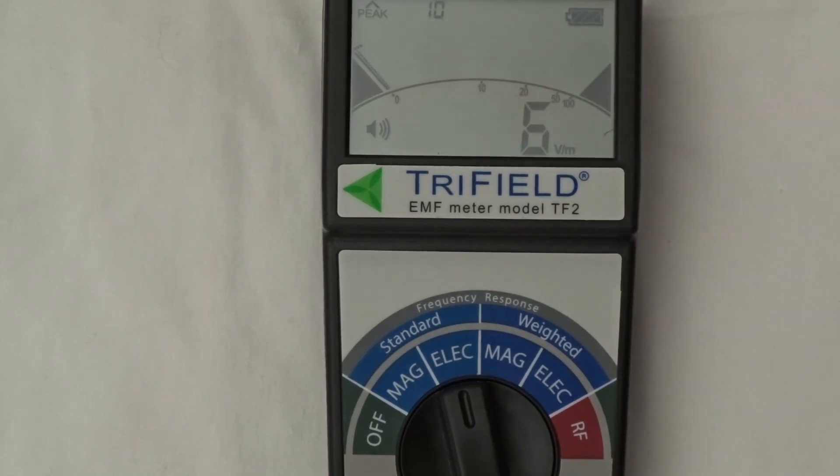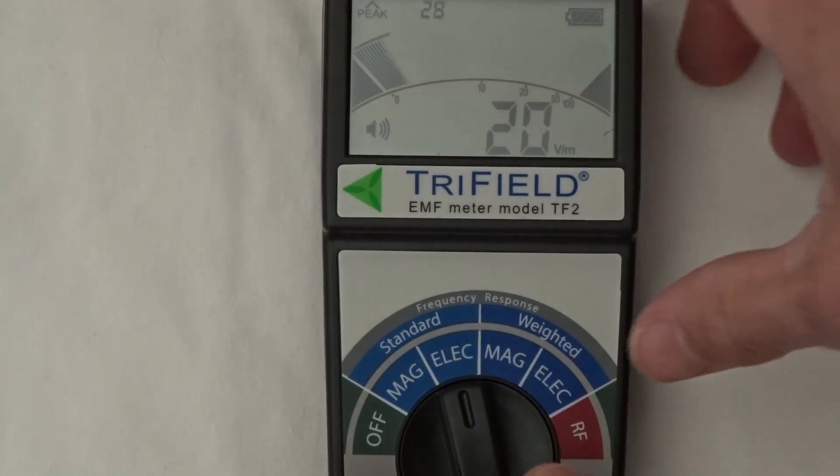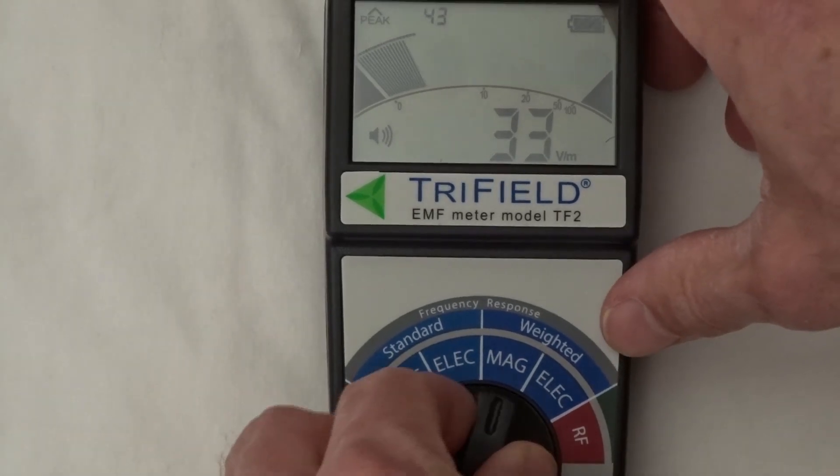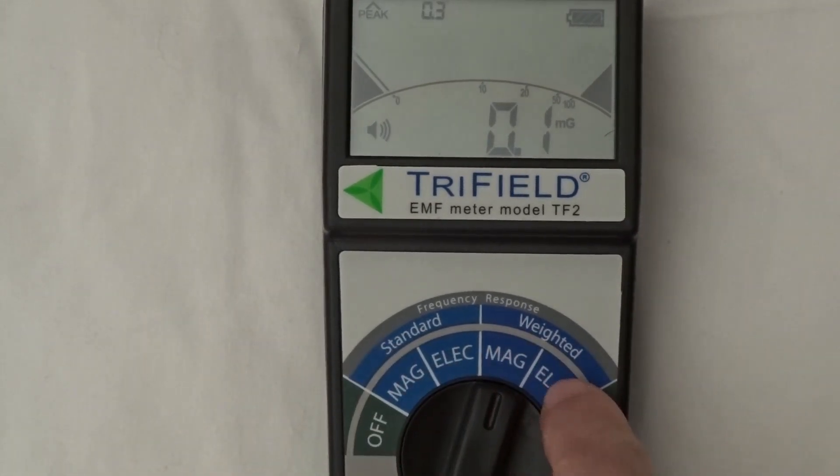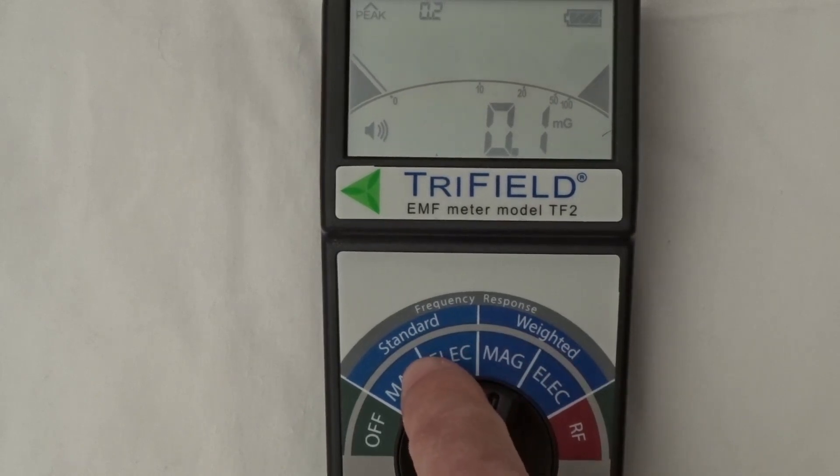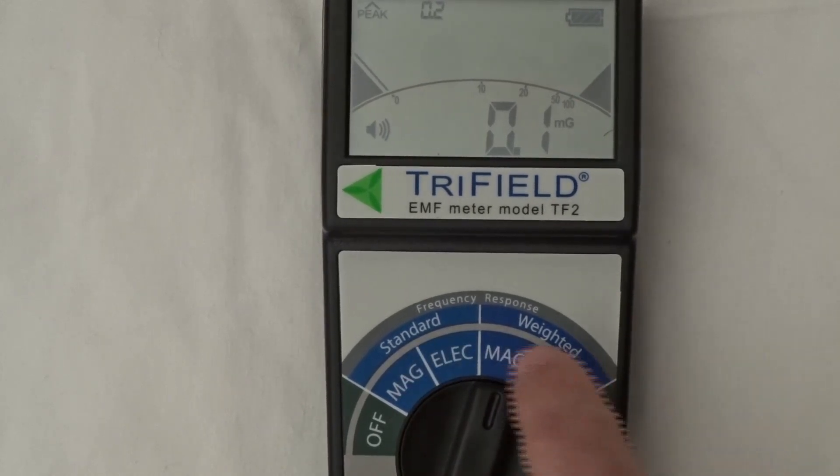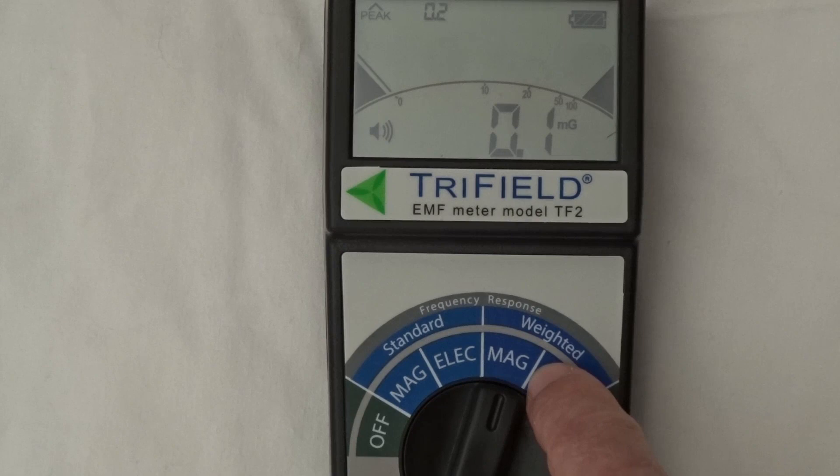And then if we move the selector switch into the dark blue area, as opposed to the light blue area, it's not very clear, but there is a light blue and a dark blue. So we're in the dark blue here.